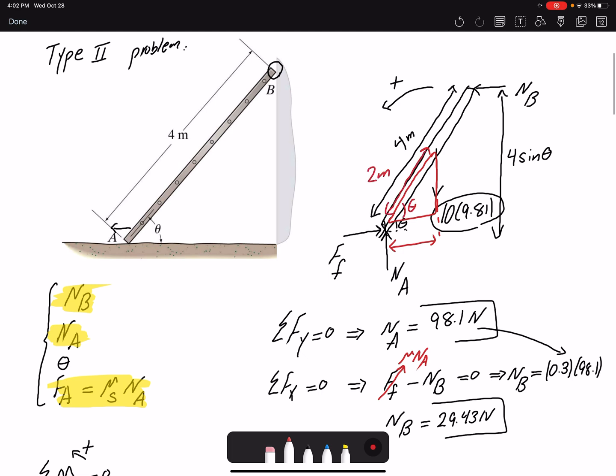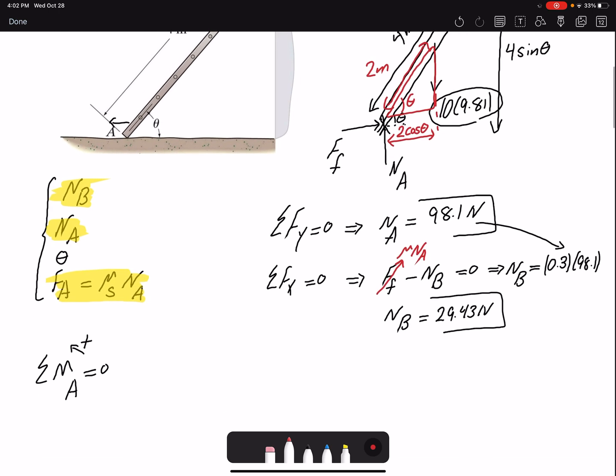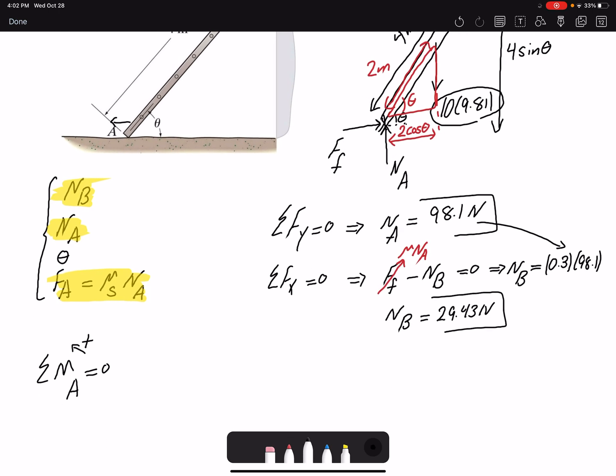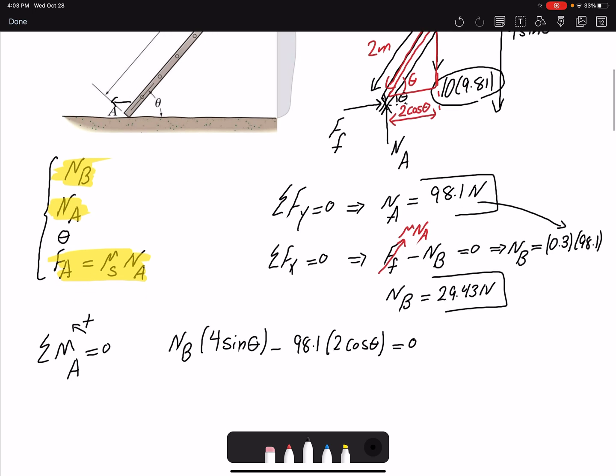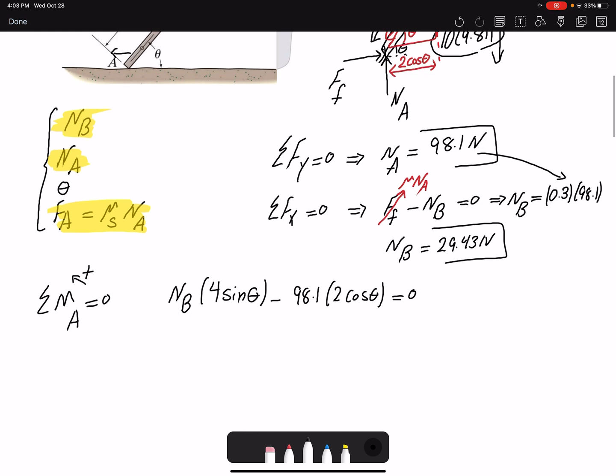Now that I have the moment arm, I can write my equation. Nb is creating a counterclockwise moment, so it's positive. Moment arm is 4 sine theta. Then I have my weight, 98.1, moment arm is 2 cosine theta, equals 0.